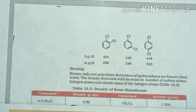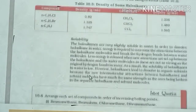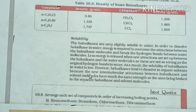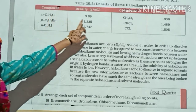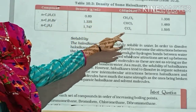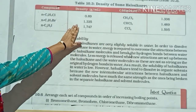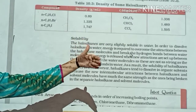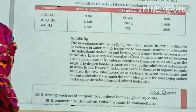Next, if we talk about density, density is mass upon volume. Depending on the mass and volume of the compound, it will have its corresponding density.